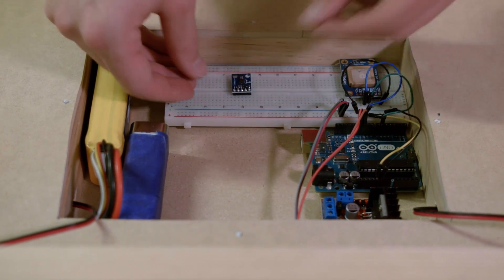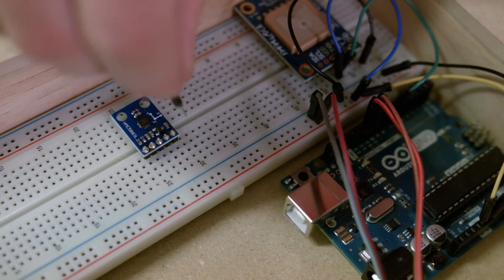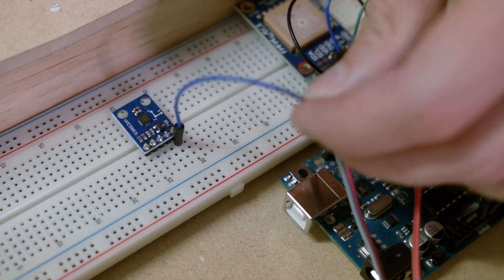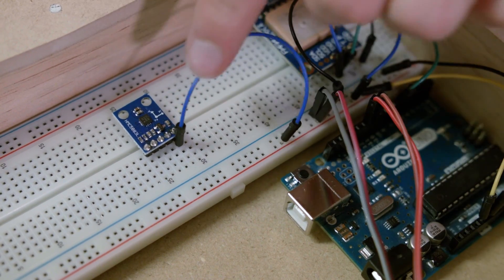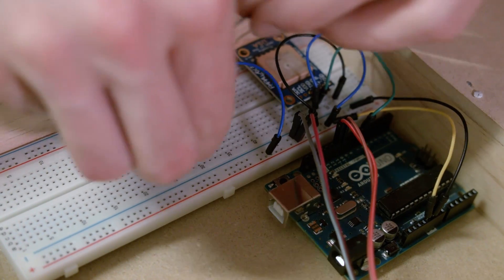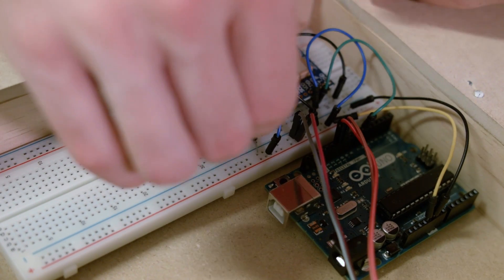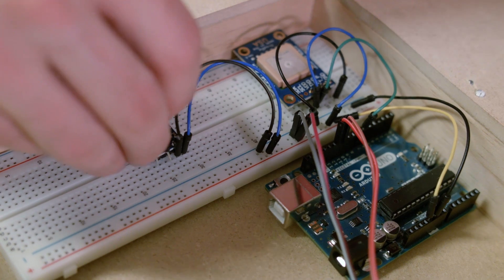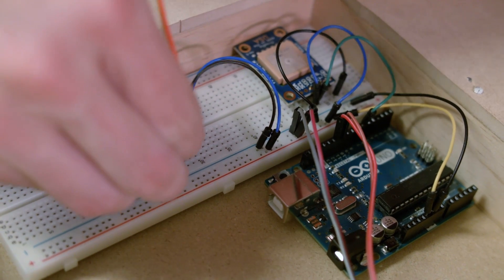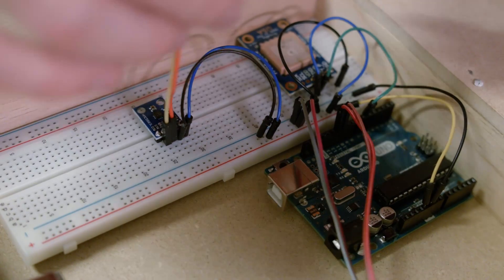This component uses I2C. Pins A4 and A5 are used for I2C on the Arduino Uno. I hooked the corresponding pins up to the I2C ports on the Arduino Uno.